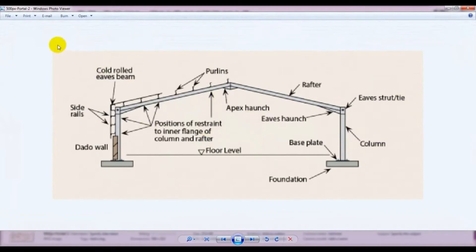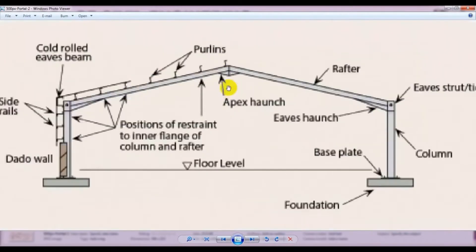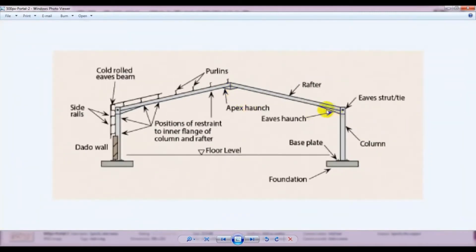This is only for educational purposes. First of all, you have to know that this is the column, and this is the rafter. Here one rafter is parallel to the other, and this point is known as the apex. This connection is known as the apex haunch.